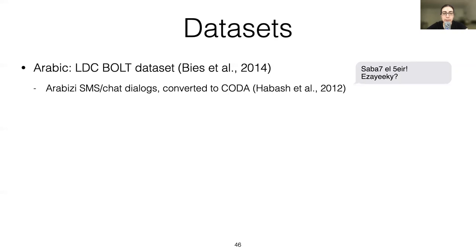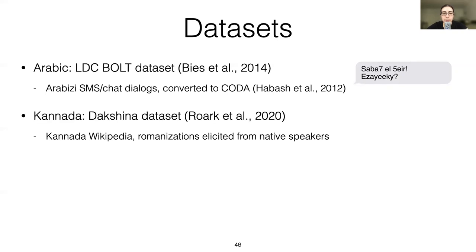For Kannada, we used Dakshina, a corpus of romanization and native script data for 12 South Asian languages. Unlike Arabic, the texts are from Kannada Wikipedia, originally written in Kannada script, and the romanizations are then elicited from native speakers. Because of this, we might have less diversity on the romanized side, but there will probably be more spelling variation in the native script.